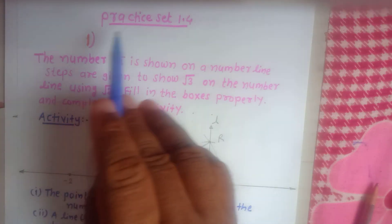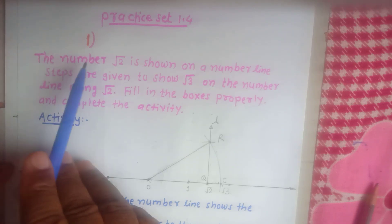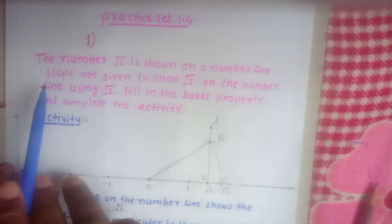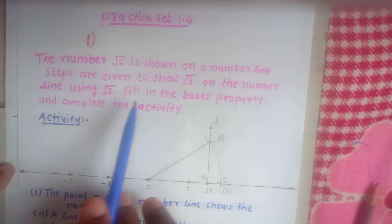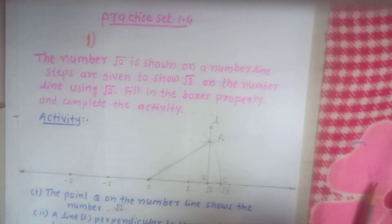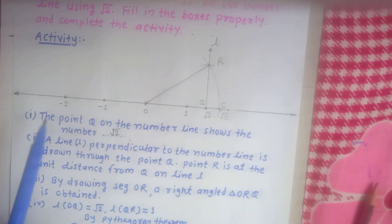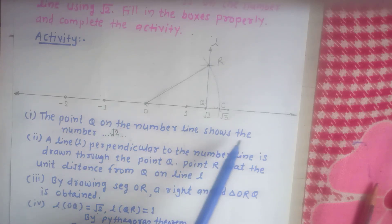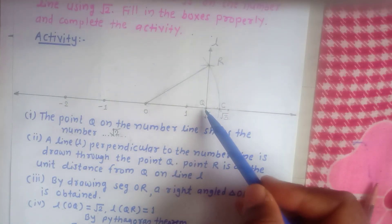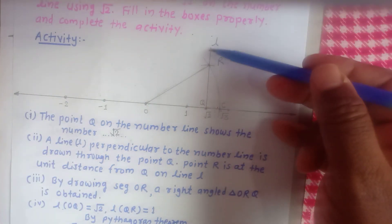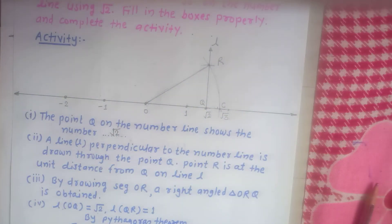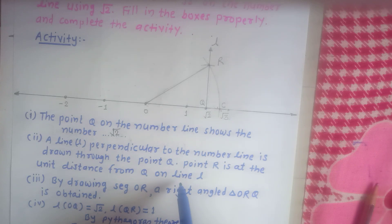Practice set 1.4, Question number 1: The number root 2 is shown on the number line. Steps are given to show root 3 on the number line using root 2. Fill in the boxes properly and complete the activity. Point Q on the number line shows the number root 2. A line L perpendicular to the number line is drawn through point Q.